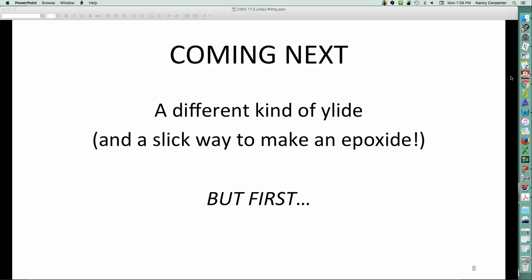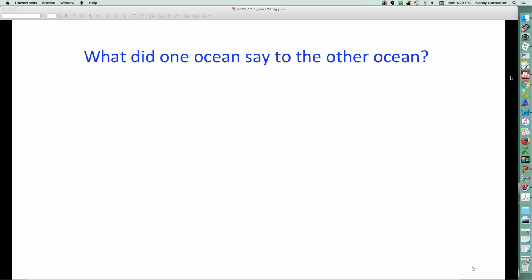So, the Wittig makes alkenes from carbonyls. We'll learn in the next mini-lecture about the sulfonium ylide, which has a completely different outcome, but does make a carbon-carbon bond and makes an epoxide at the same time. Very cool.